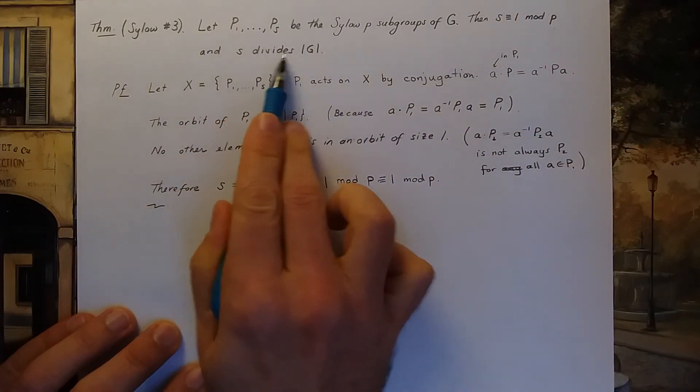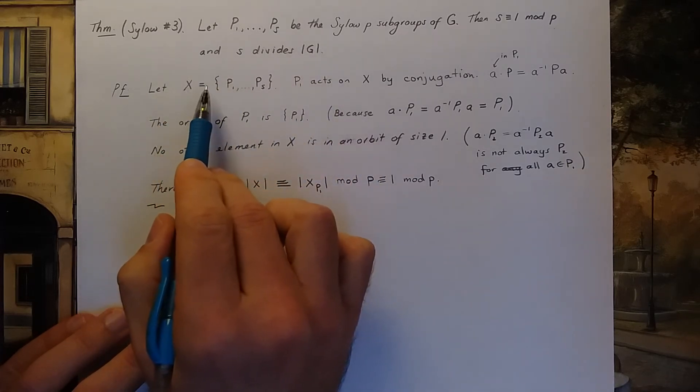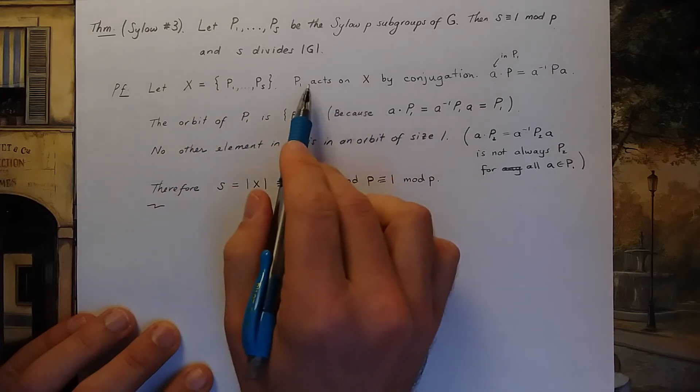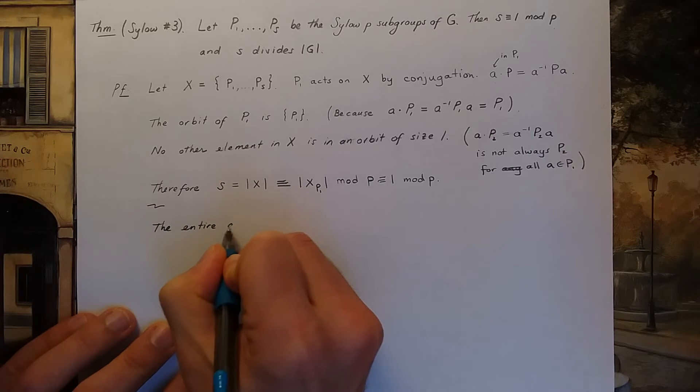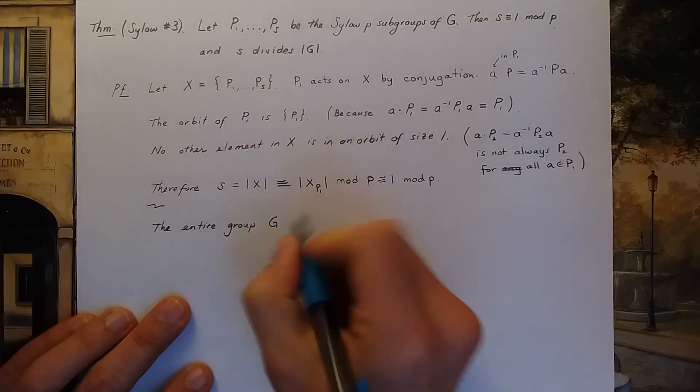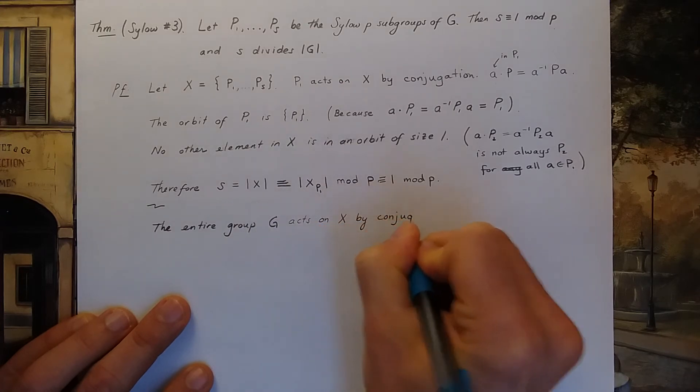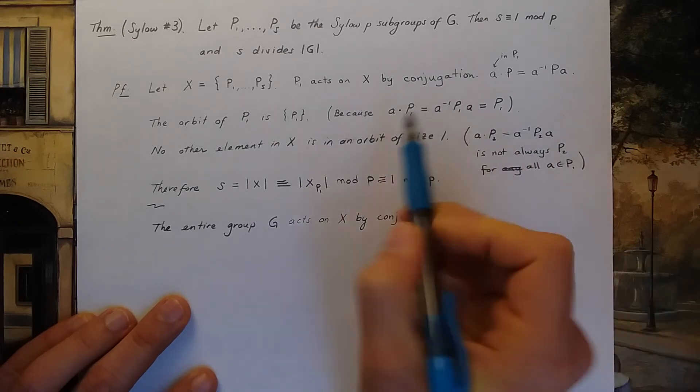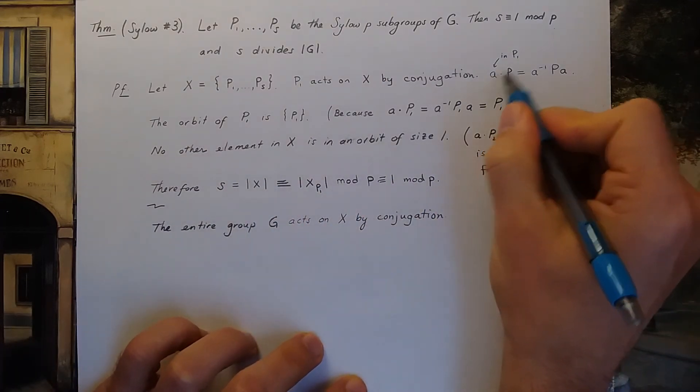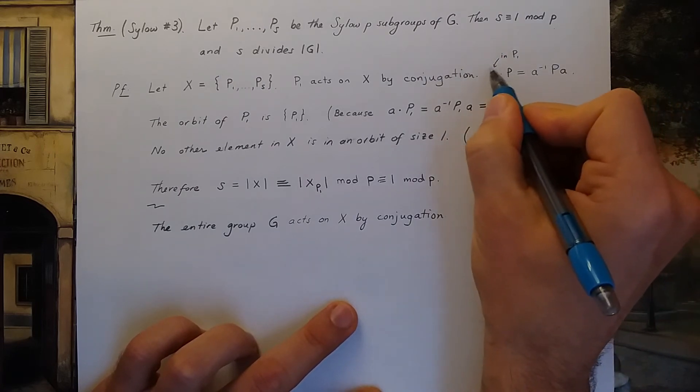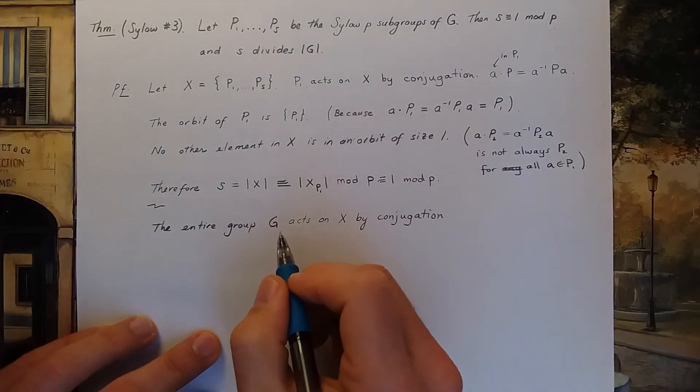Now for the second part, I need to prove that S divides |G|. I'm still going to keep the same set X, but this time I'm going to act on X by the entire group G. So the entire group G acts on X by conjugation. I'm not going to just use elements in P₁ like I did for this argument here. I'm going to use any element a I'd like. So it's the same kind of idea as before, except I'm enlarging what my values of a could be.